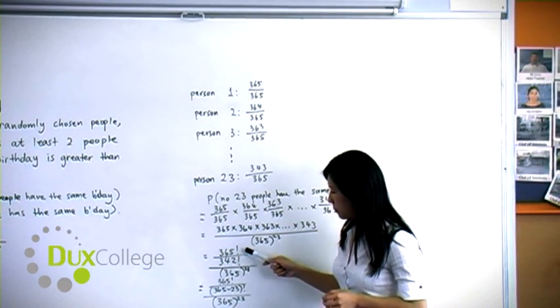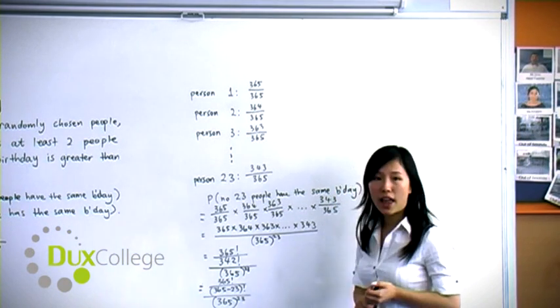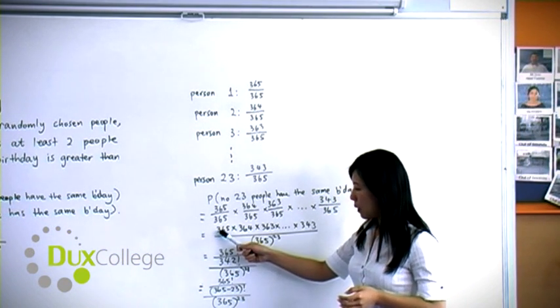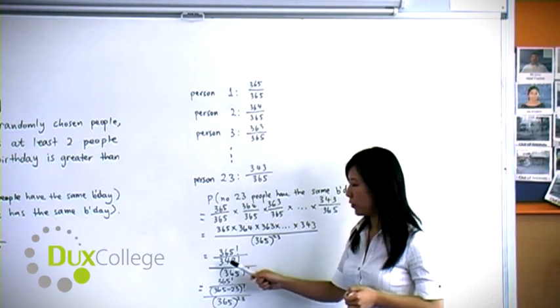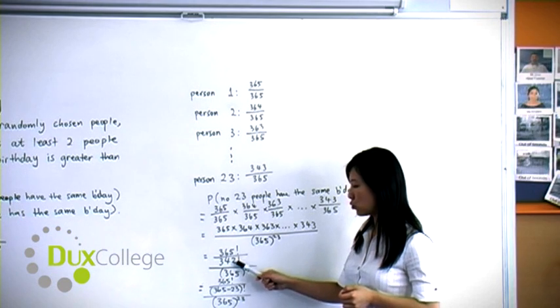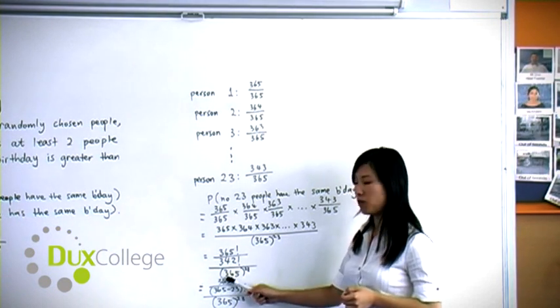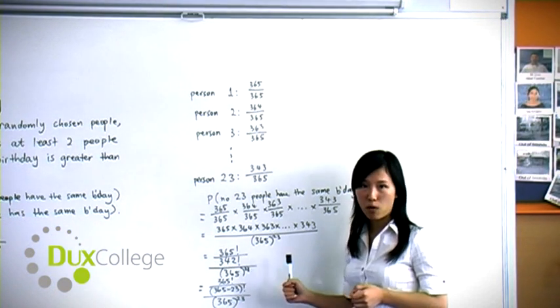So now how can we simplify our numerator? We can break this down into 365 factorial over 342 factorial, over 365 to the power of 23.